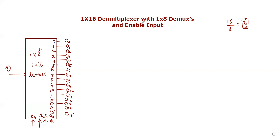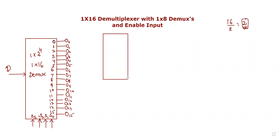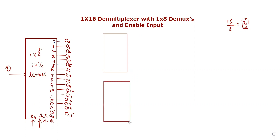If you want to add input, you can also use enable input. So let's look at the first one. I have two D-multiplexers. This is one 1 by 8 and this is another 1 by 8, so there are two inputs.